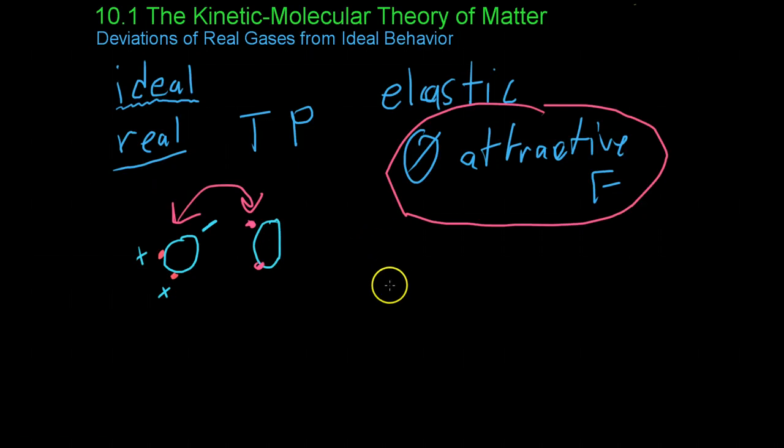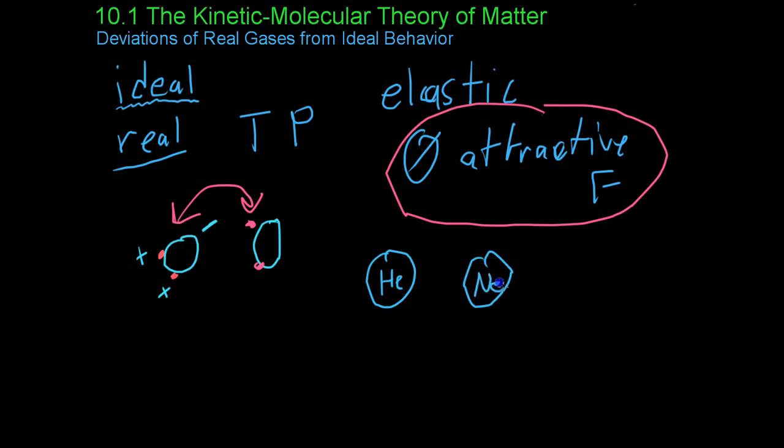However, some noble gases, let's say helium or neon, which are very unreactive and not at all charged, will tend to obey ideal gas behavior over a wide variety of temperatures and pressures.